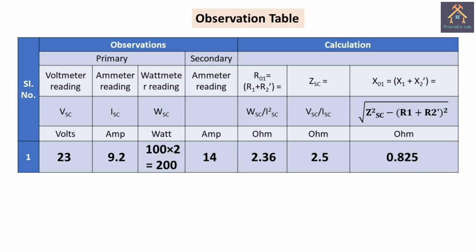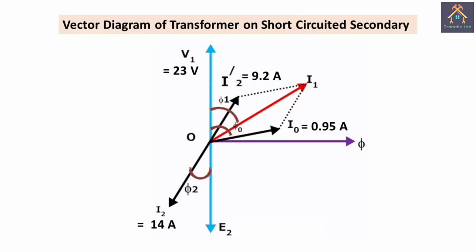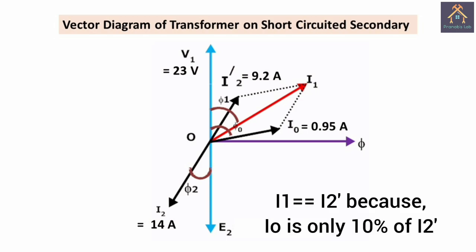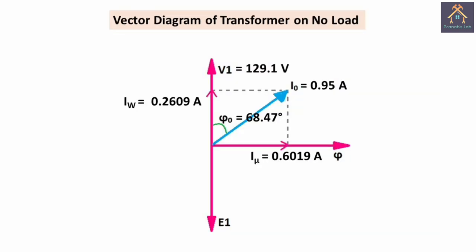This data is enough for drawing the vector diagram and the equivalent circuit of the transformer on short circuit test condition. In the vector diagram, the no-load primary current is 0.95 ampere, measured from the open circuit test. The primary load current I2' is 9.2 ampere, and the secondary current I2 is 14 ampere. I2' and I2 are in antiphase with each other. The resultant of the no-load current I0 and load current I2' is the primary current I1. I1 and I2' will be nearly the same because the no-load primary current is negligibly small. From the open circuit test vector diagram, the no-load current had two components only — Imu and Iw — and there was no load current component; the no-load primary current was the only primary current taken by the transformer.